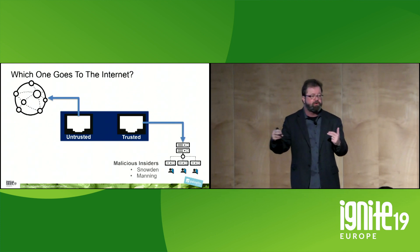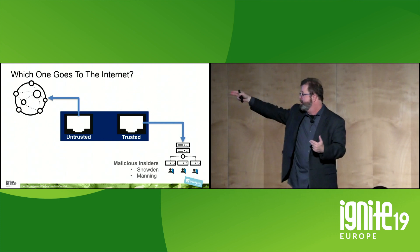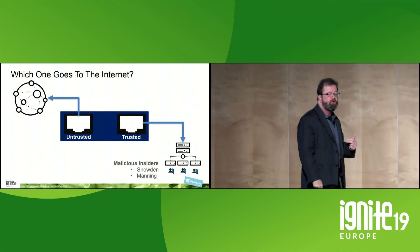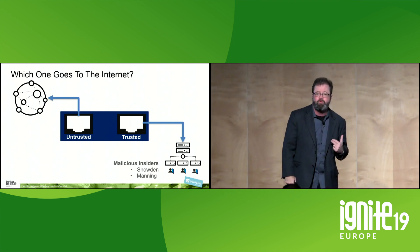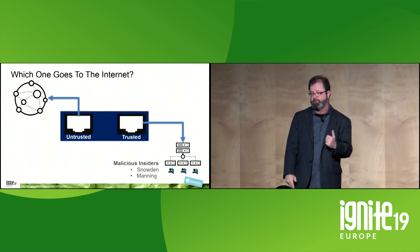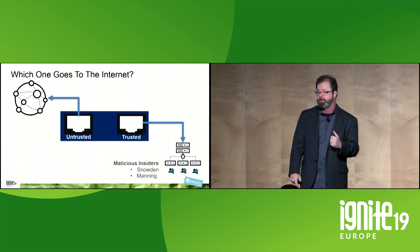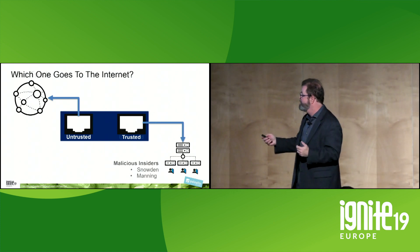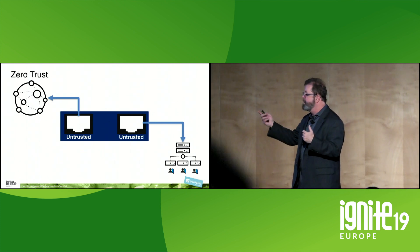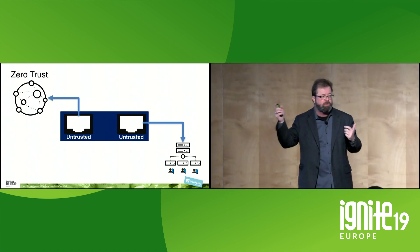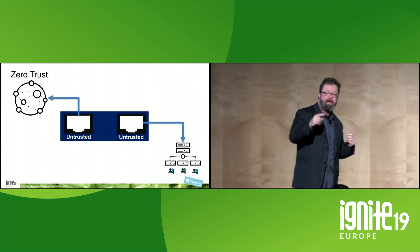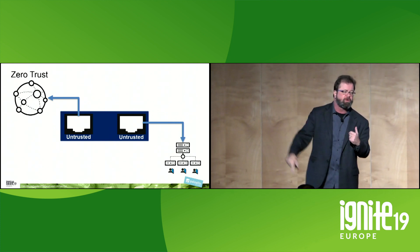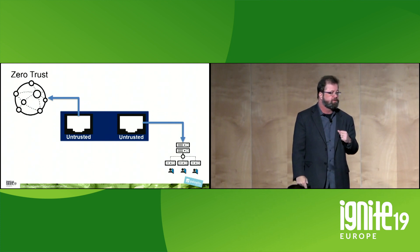This is why people who tell you that MFA equals Zero Trust are lying to you. If that were true, neither Snowden nor Manning could have happened, because they have better MFA than you can ever afford. So we have to get rid of trust — no more trusted systems, no more trusted packets, no more trusted interfaces, no more trusted devices.